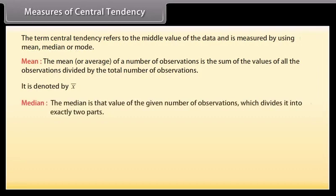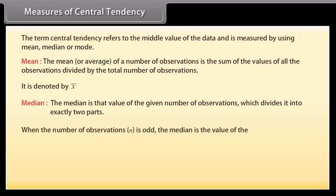The median is that value of the given number of observations which divides it into exactly two parts. When the number of observations, that is n, is odd, the median is the value of the (n+1)/2th observation.